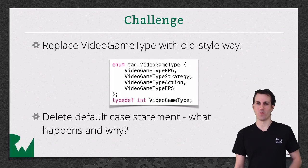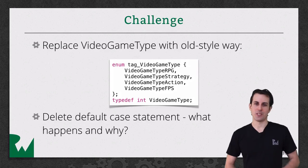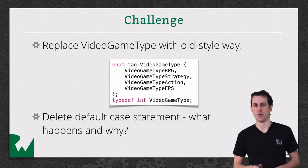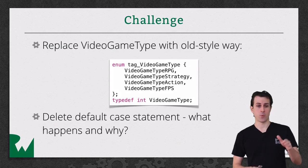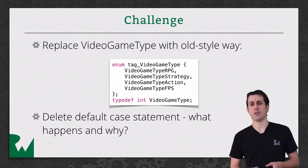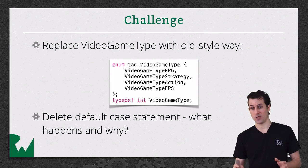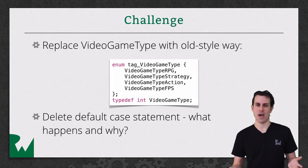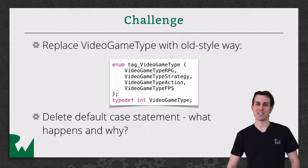All right, that's it for this video tutorial. But before we go, I want to leave you guys with a challenge. Take that VideoGameType example from the demo and replace it with the old way of doing things. Then delete the default case in the switch statement, build your code, and see what happens differently than before. Ask yourself why that happened and how it shows you one of the advantages of using this new macro style. I hope you enjoyed this video tutorial, and we'll see you next time.